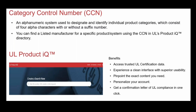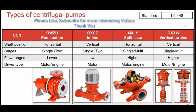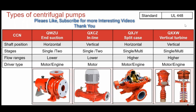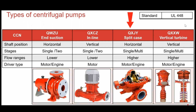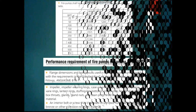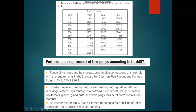The marking you see is called a Category Control Number (CCN), which contains four alpha characters with or without a suffix number. We can find the list of approved manufacturer details by using this CCN number for a specific product. Different pump types are approved for firefighting — for example, in-line pumps with CCN QWZU are horizontal type with single or two-stage impellers used for lower flow rates, with electric motor or diesel engine drivers. For higher flow rates, horizontal split-case pumps are used under CCN QXJY. Available capacities range from 25 GPM to 5000 GPM.